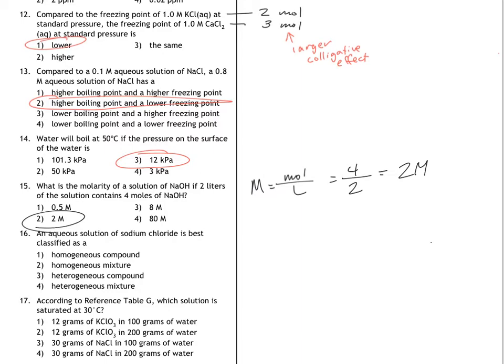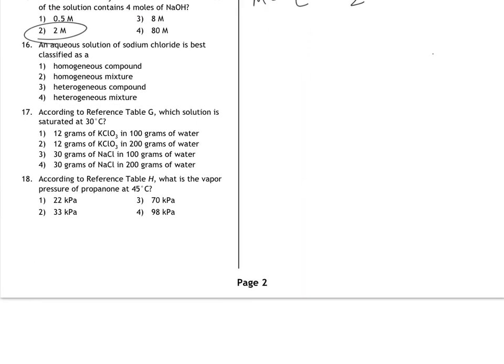For number 16, it says an aqueous solution of sodium chloride is best classified as. And the best answer here would be a homogeneous mixture.